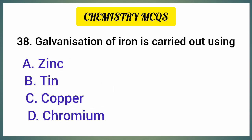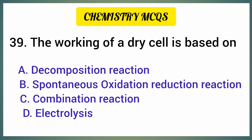Galvanization of iron is carried out using — correct option is option A. The working of a dry cell is based on — correct option is option D: Electrolysis.